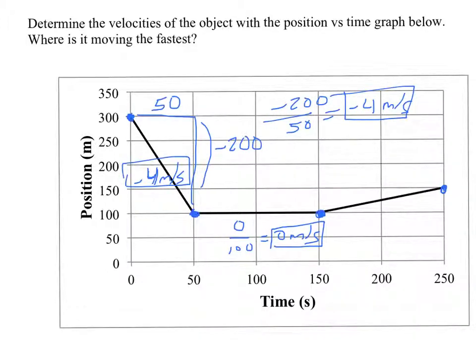And now the last region. Okay, the rise is from 100 to 150, so that's a change of 50 meters. And the run is from 150 to 250, so that's 100 seconds. So the slope is 50 meters over 100 seconds, or 0.5 meters per second. So those are the three velocities over each region.